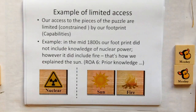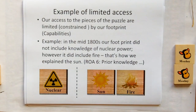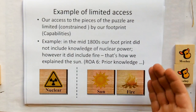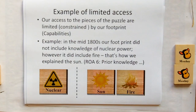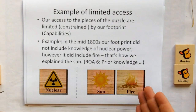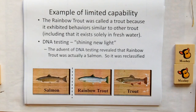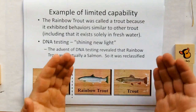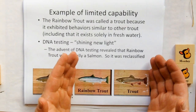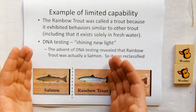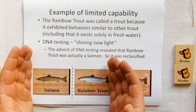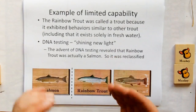Let me give you an example of when we have a limited footprint — limited technology, limited understanding, limited access to other pieces of the puzzle. In the mid-1800s, our footprint did not include knowledge of nuclear power — we were missing this piece of the puzzle. But our knowledge did include fire. And as the old saying goes, if all you have is a hammer, everything begins to look like a nail. If all you know is fire, then anything that generates heat and light must be combustion — and sure enough, we thought that the sun was a big burning ball of coal.